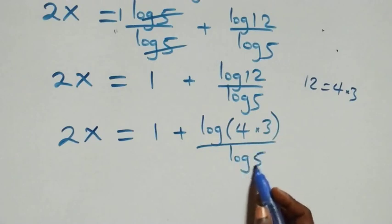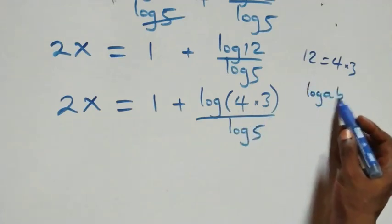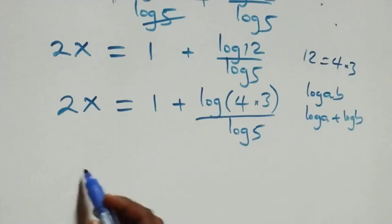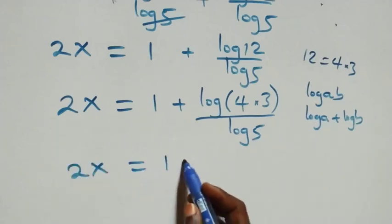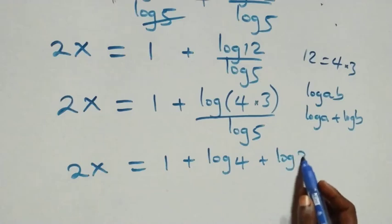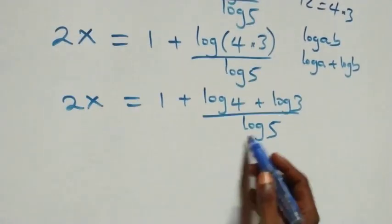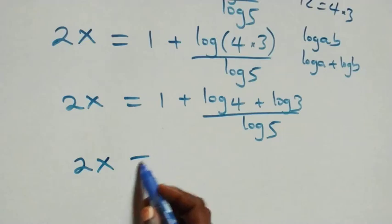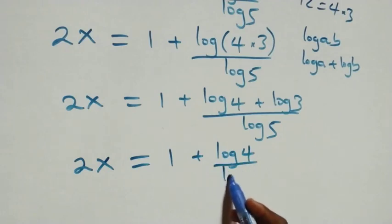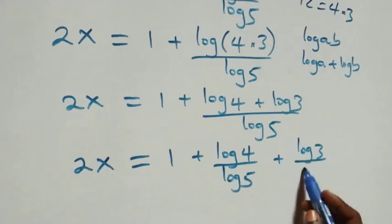Applying log(a times b) equals log a plus log b, what we have becomes 2x equals 1 plus log 4 plus log 3, all over log 5. We then separate this into two fractions: 2x equals 1 plus log 4 over log 5 plus log 3 over log 5.